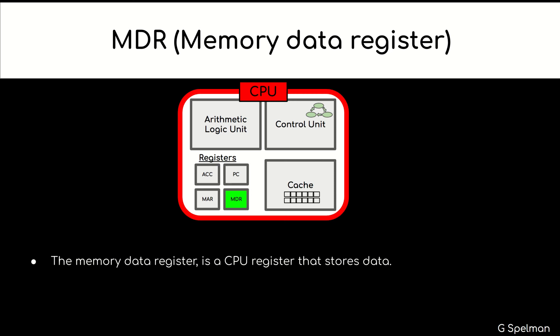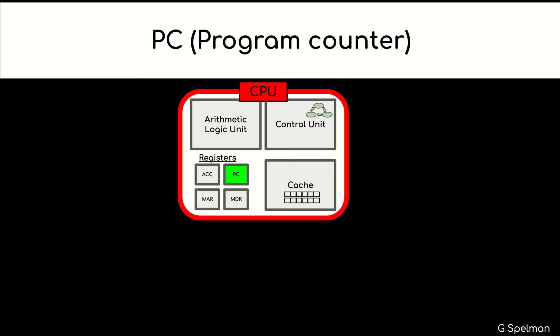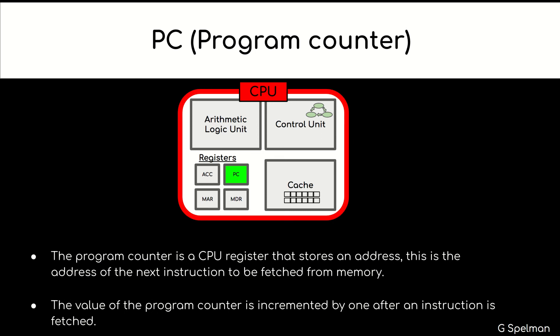The memory data register is a CPU register that stores data. This is data that has just been read from or is about to be written to memory. Program counter: the program counter is a CPU register that stores an address. This is the address of the next instruction to be fetched from memory. The value of the program counter is incremented by 1 after an instruction is fetched.